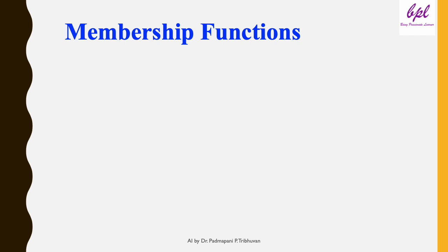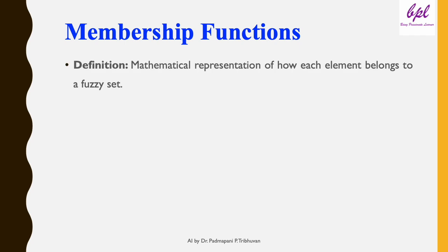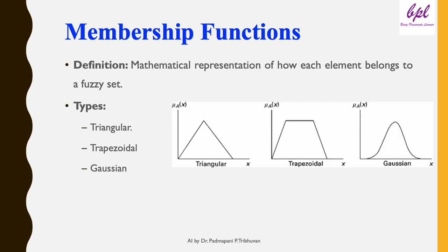Now let's discuss membership functions. Membership functions are the cornerstone of fuzzy sets — they quantify the degree to which an element belongs to a fuzzy set. They are often represented graphically, where the x-axis represents the domain of the input variable (for example, temperature) and the y-axis represents the membership degree. Different types of membership functions include triangular, trapezoidal, and Gaussian functions.